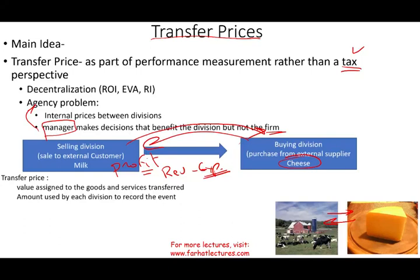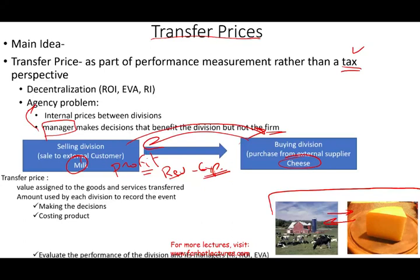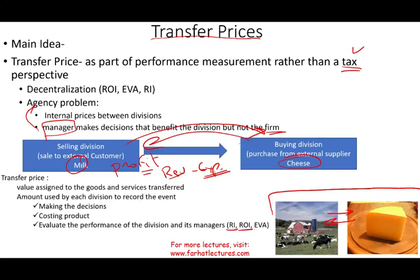Why is this important? Because if the milk and cheese division belong to the same company, why do we care about transfer prices? Because if we are a profit division, we have to make decisions about revenues and expenses and how much to charge for the product. The division's performance in the eyes of corporate will matter — whether we are making a lot of profit, a little, or none — because they will evaluate our performance based on residual income, return on investments, and economic value added.